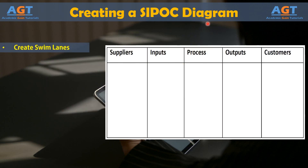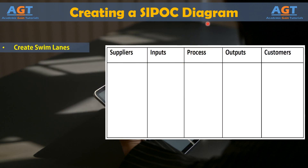Step 1: Create Swim Lanes. A SIPOC diagram is based on Swim Lanes. Swim Lanes let you show how cross-functional activities and resources relate to your process. A SIPOC diagram gets five lanes, one each for suppliers, inputs, process, outputs, and customers. You'll end up with something that looks like this table.